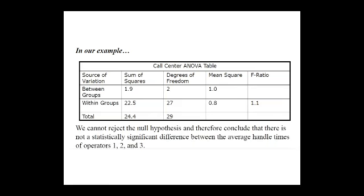The conclusion table shows source of variation (between group, within group, and total) with corresponding sum of squares, degree of freedom, mean square, and F-ratio. Between group: SS = 1.9, df = 2, MS = 1. Within group: SS = 22.5, df = 27, MS = 0.8. F-ratio = 1.1. Since 1.1 is less than the critical value of 3.35, we cannot reject the null hypothesis and therefore accept it. The conclusion is that there is no significantly significant difference between the average handle times of operators 1, 2, and 3.